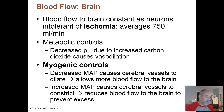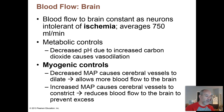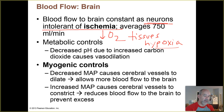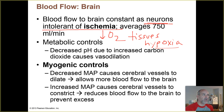The body has to maintain blood flow to the brain very carefully. The neurons in the brain are intolerant of ischemia — a cutoff in oxygen supply to tissues — meaning tissues experience hypoxia. You need about 750 milliliters per minute of blood flow to the brain. Looking at that diagram of rest versus exercise, blood flow to the brain stays pretty constant around 750 milliliters per minute regardless of activity.